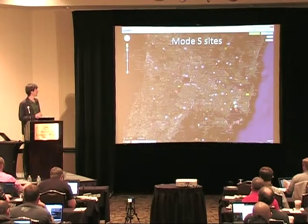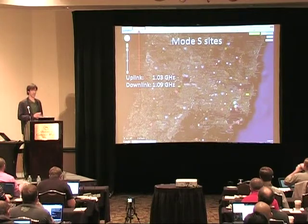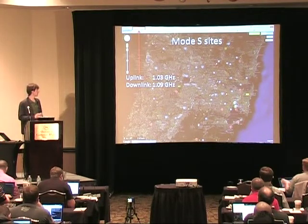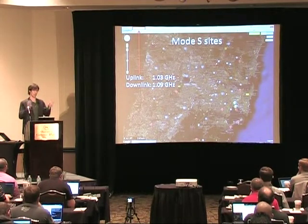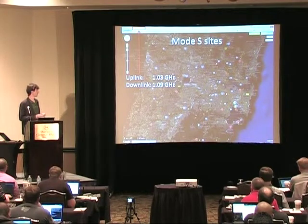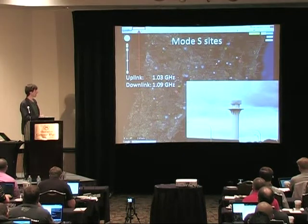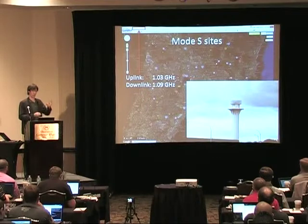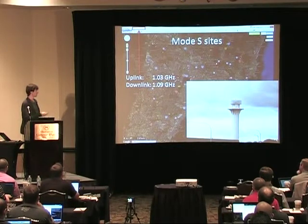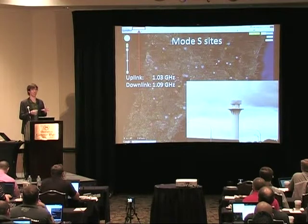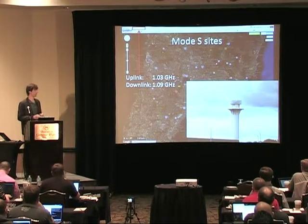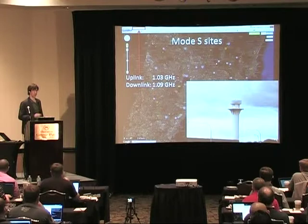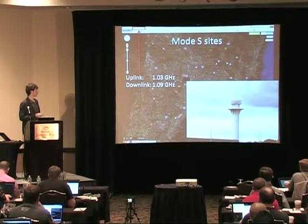If you look at the Mode S receiver and transmitter sites in the Sydney area, there are actually quite a few spread around the place — not only at the airport. Usually it's distributed far and wide and fed back into a central processing facility. This is what the systems usually look like at the airport — different from that big rotating dish, it looks like some sort of antenna with a massive heatsink on top. I actually noticed one here at the airport when we landed yesterday.